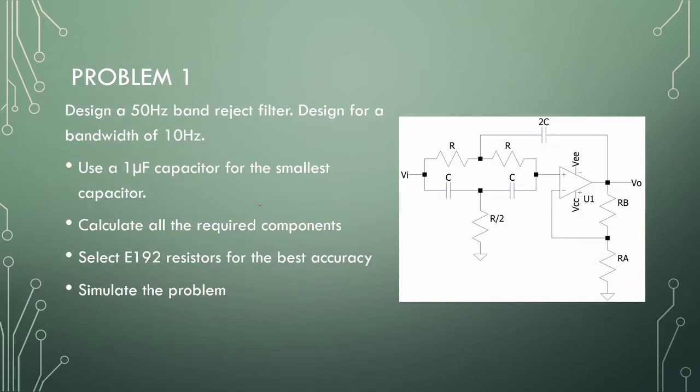Let's jump to a design problem. The typical one would be to get rid of some power supply noise in a system. Most countries it's 50 Hz, other countries like the US, it will be 60 Hz. This is a typical use for a band reject filter. Let's design for 50 Hz with a bandwidth of 10 Hz, use one microfarad capacitor, calculate all the components and simulate the problem.